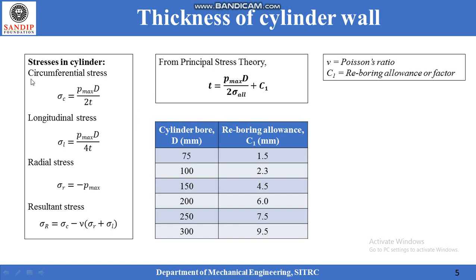Various stresses are experienced by the cylinder: circumferential, longitudinal, and radial stresses. They are quite similar to the stresses studied in the design of pressure vessels. Resultant stress is given by σ_r = σ_c − ν(σ_r + σ_l), where ν is the Poisson's ratio of the material. Thickness of the cylinder can be calculated by applying principal stress theory, which states that the material will fail if the principal stress exceeds the allowable stress. The circumferential stress is the most critical — the principal stress — so the formula is used to calculate thickness. Here, σ_allowable is the allowable stress given by yield strength or ultimate tensile strength divided by factor of safety, plus C1, where C1 is the reboring allowance.